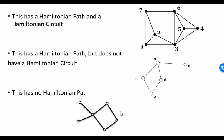In this third diagram, there is no Hamiltonian path at all, because if I follow this edge here and start going around this loop, I would have to revisit this vertex in order to get out.